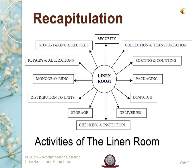Before starting today's class, we must do a quick recapitulation of the last class — that was activities of the linen room. The activities include: collection and transportation of linen, then sorting and counting, packaging and dispatch of linen which are essential in case we have an off-premises laundry, then delivery. Delivered linens must be checked and inspected for quality and quantity, then storage or resting of linen inside the linen room, followed by distribution, auxiliary activities such as monogramming, repair and alteration, stock-taking and record keeping, and lastly, ensuring security of the linen room.